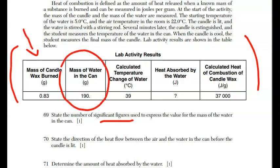For 69, it says state the number of significant figures used to express the value for the mass of the water in the can. If I look at the table, the mass of water in the can, it's 190 with a decimal point. Real simple. When you have a number greater than one and a decimal point, you count them all. That's the one, the nine, and the zero. That would be three significant figures.